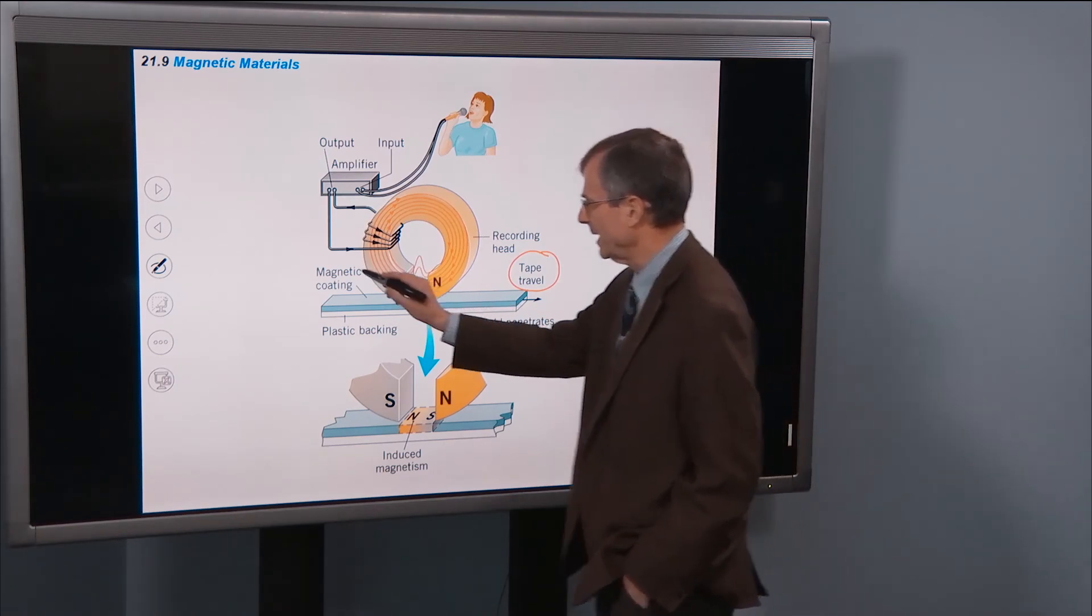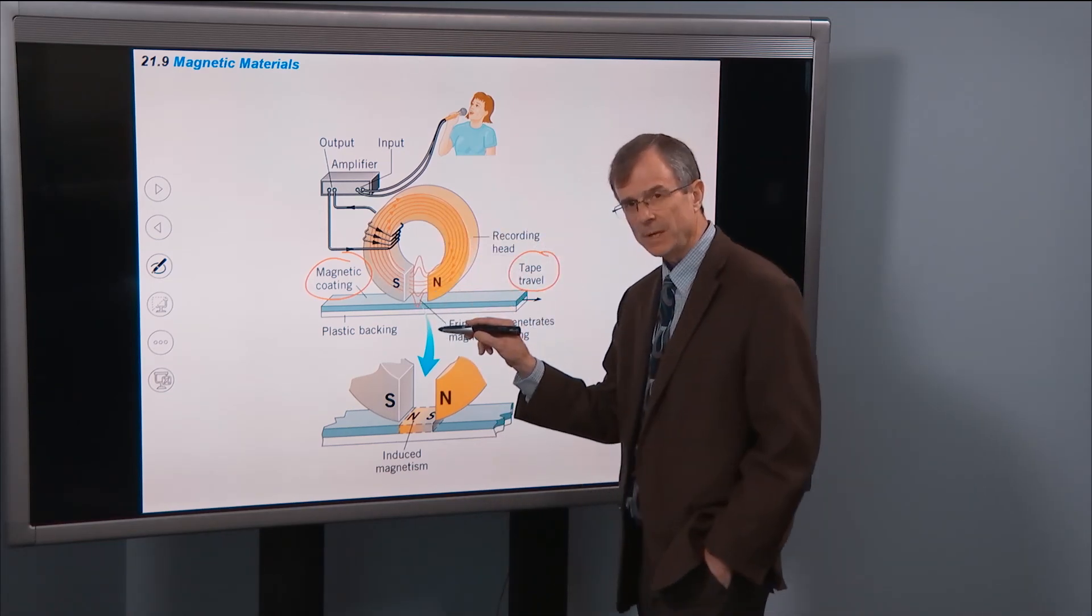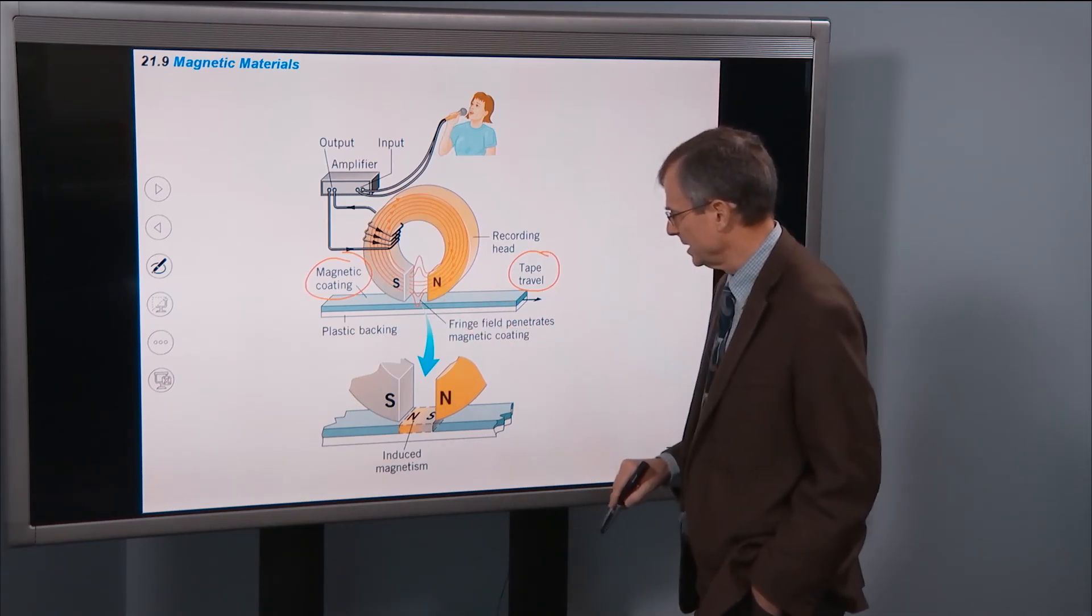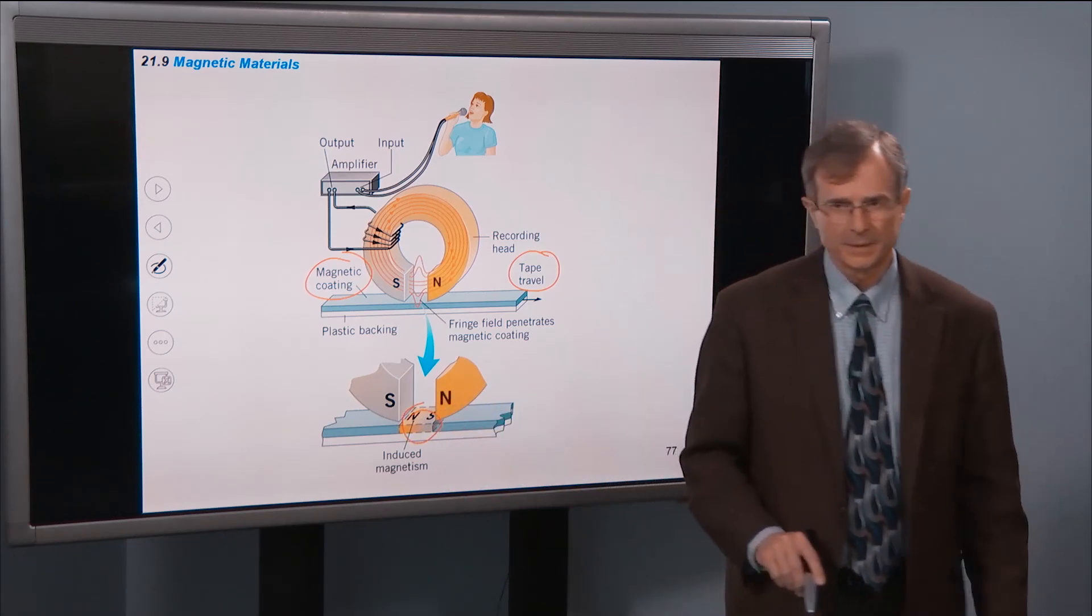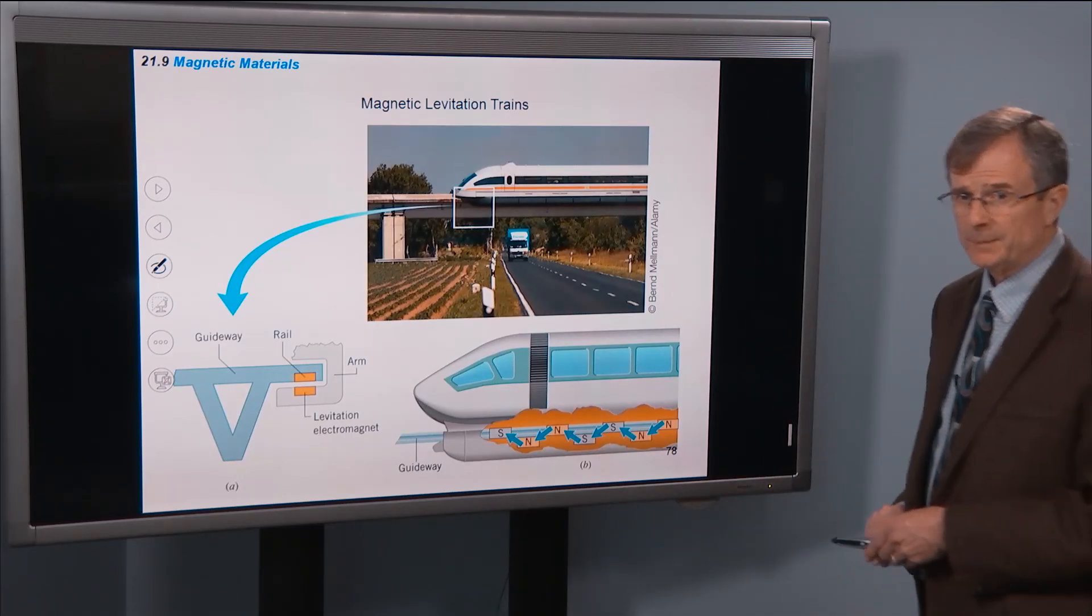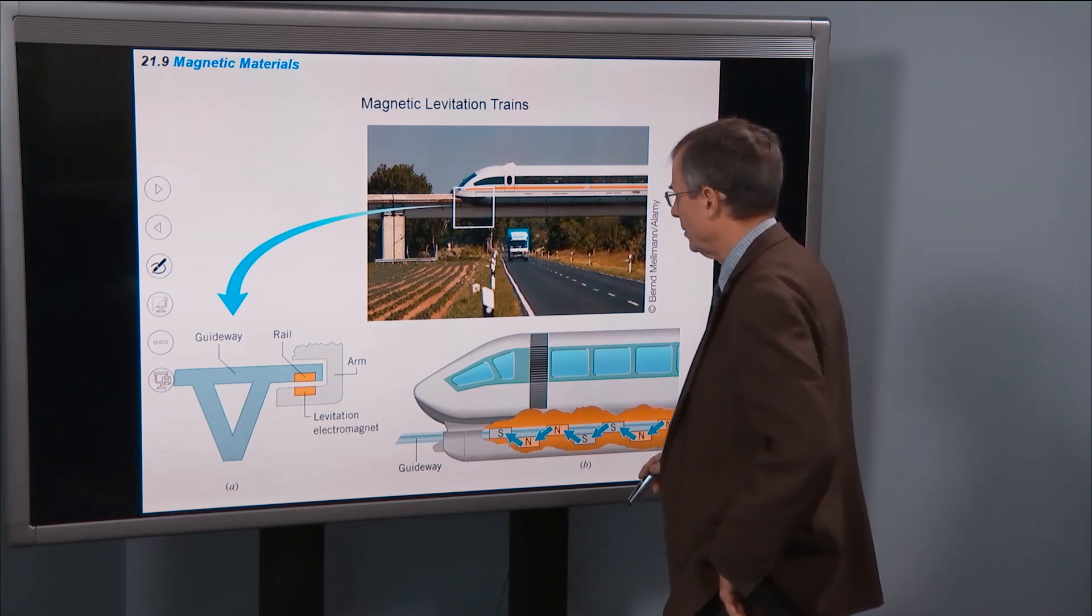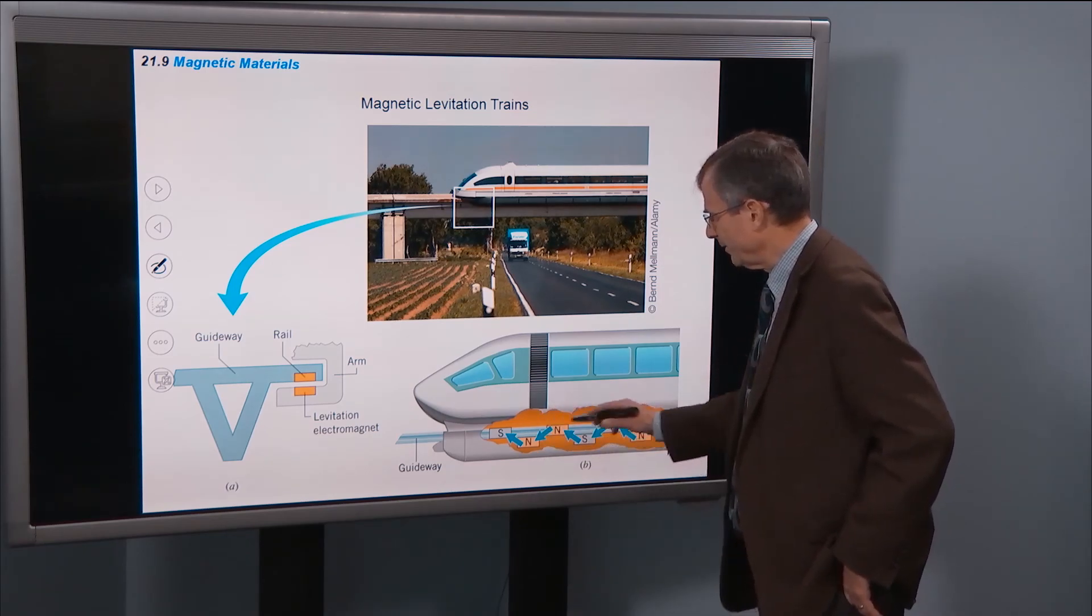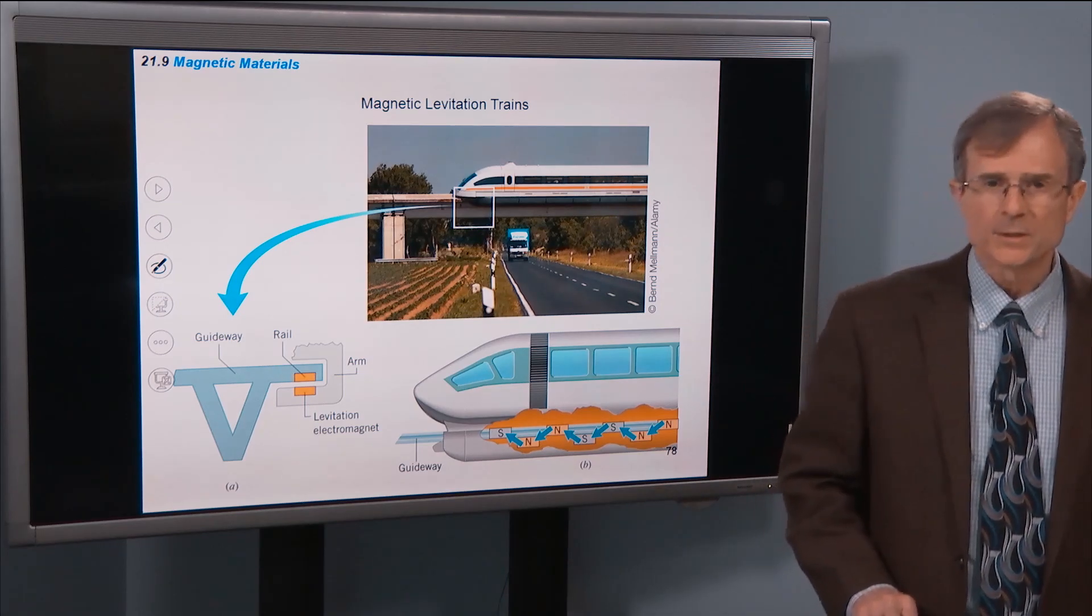And the residual fringe field from this horseshoe-shaped magnet magnetizes the surface, and then the head can actually pick up the little magnetic domains of the tape. Also, electromagnets are used for maglev trains, where you have magnetic fields along the guideway, and that actually levitates the train.